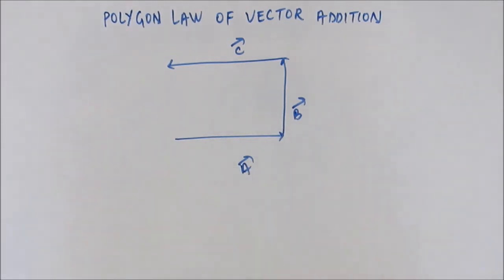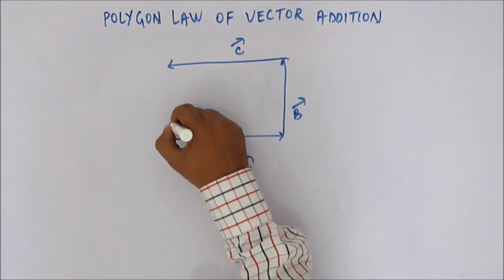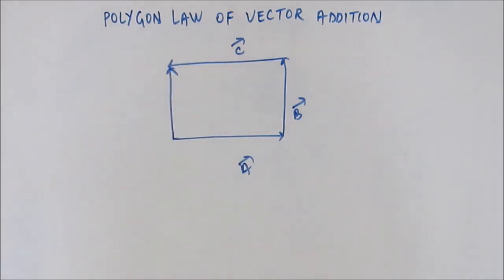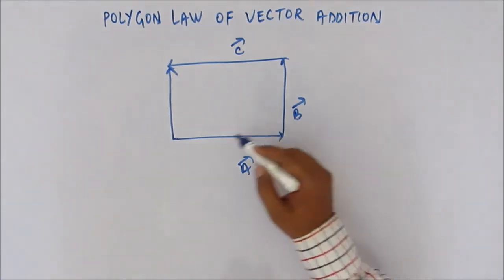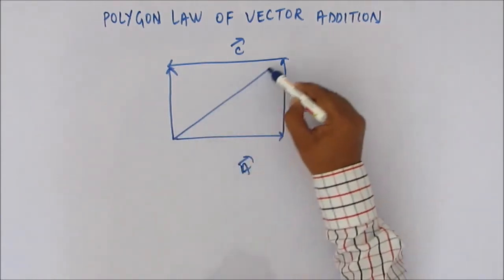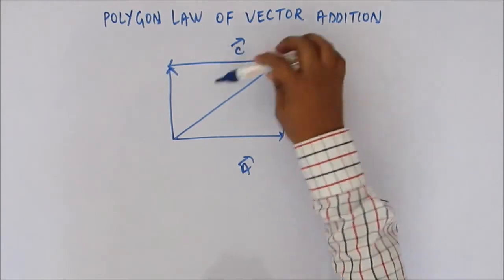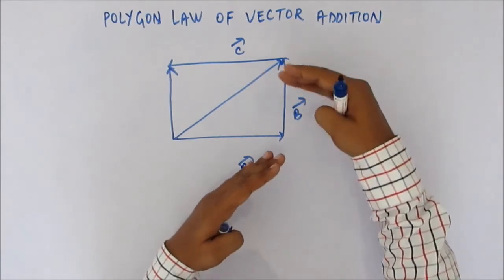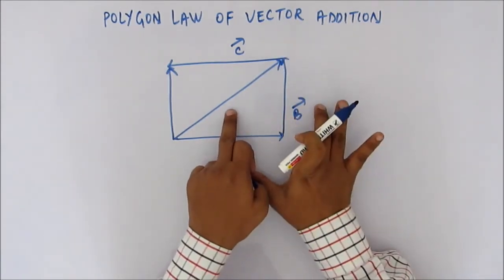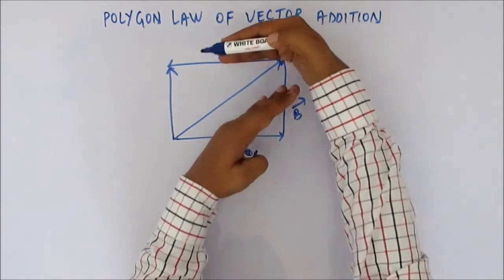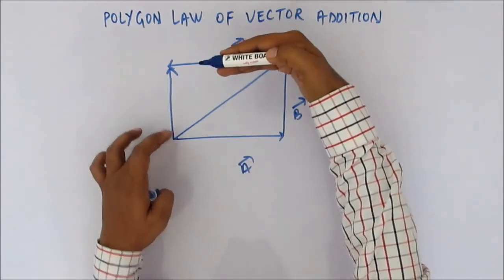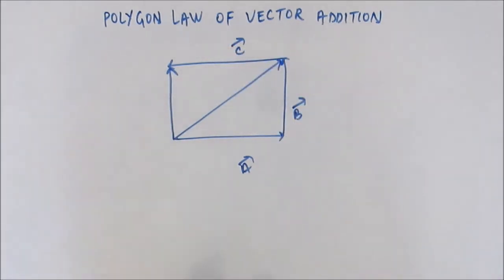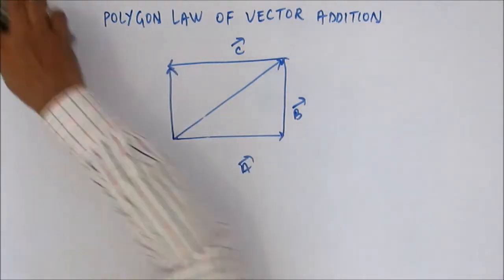The vectors are taken in the anti-clockwise sense, so the resultant vector is the fourth side taken in the reverse order. Even without knowing the polygon law, you could do this: vector a + vector b is simply this vector, and the resultant of a, b, and c is this vector. In the triangular law we arrange vectors head to tail, then join tail to head to get the resultant.